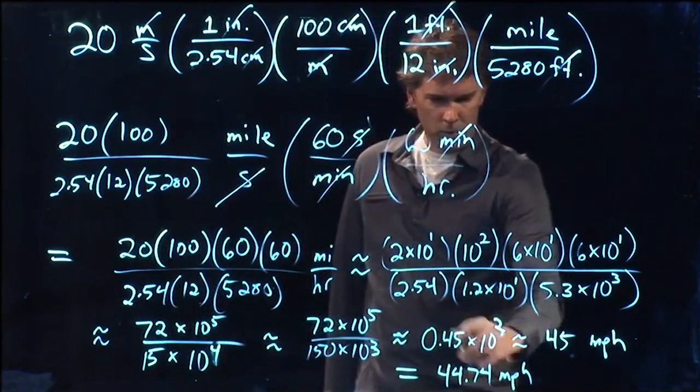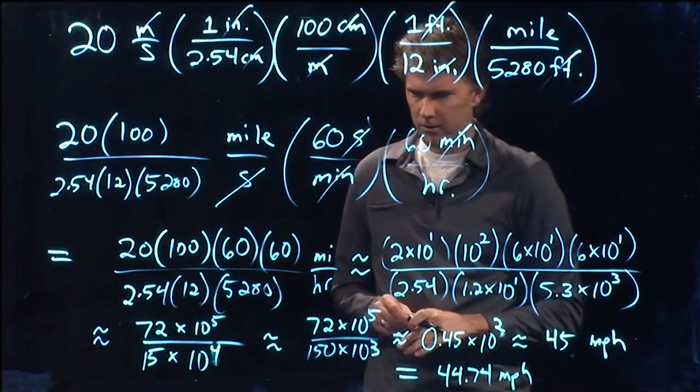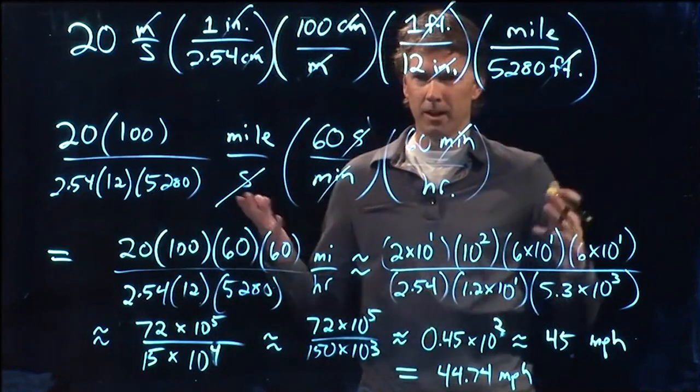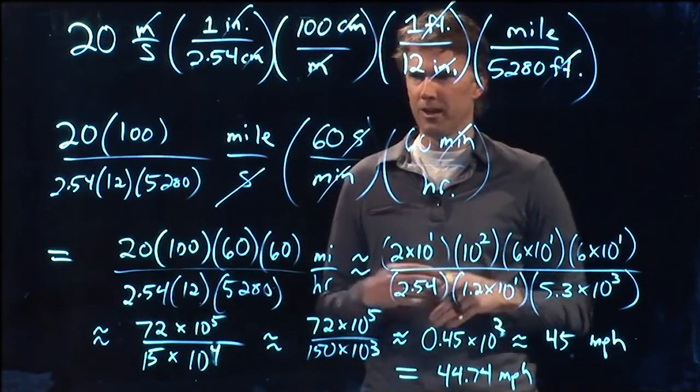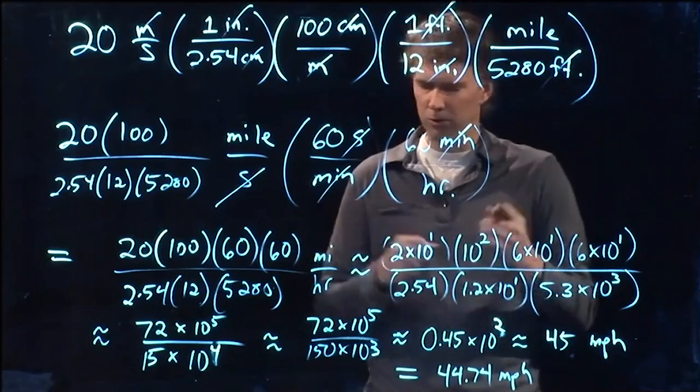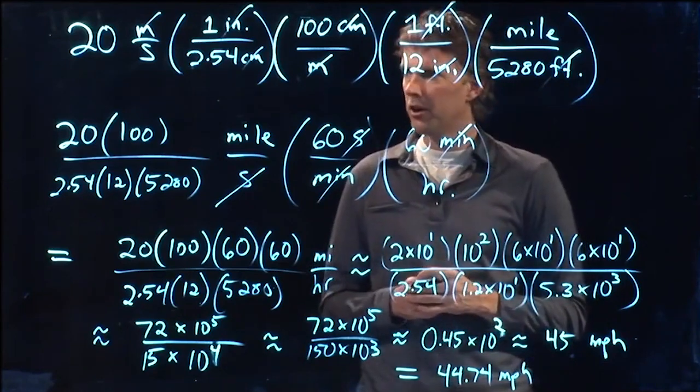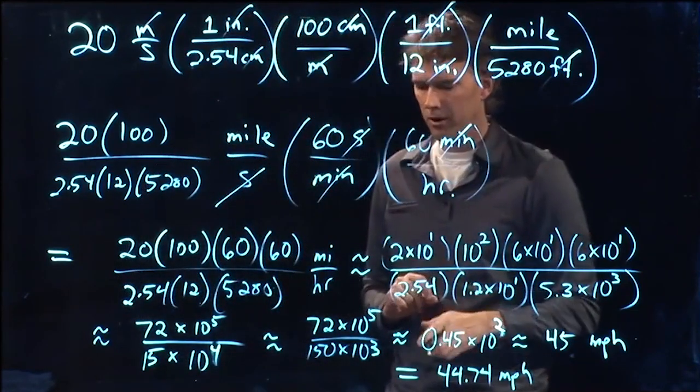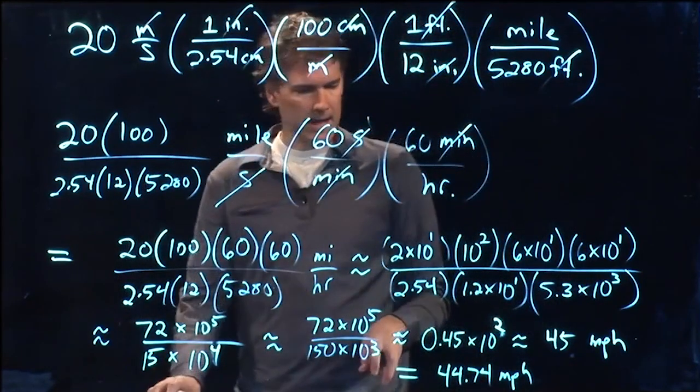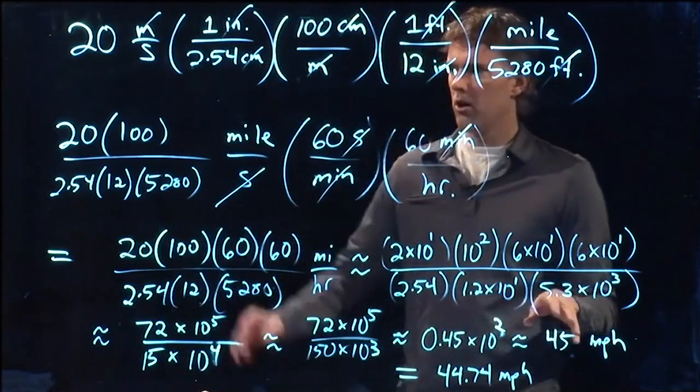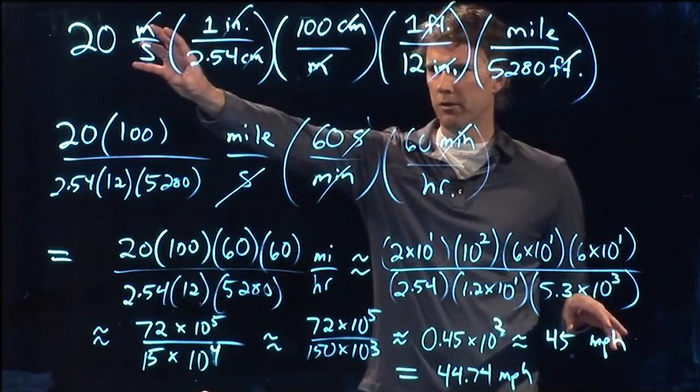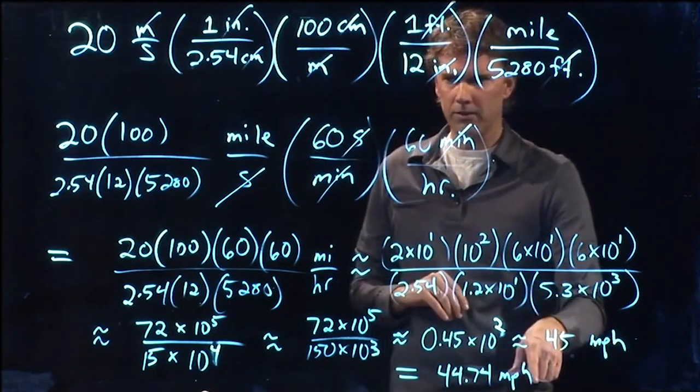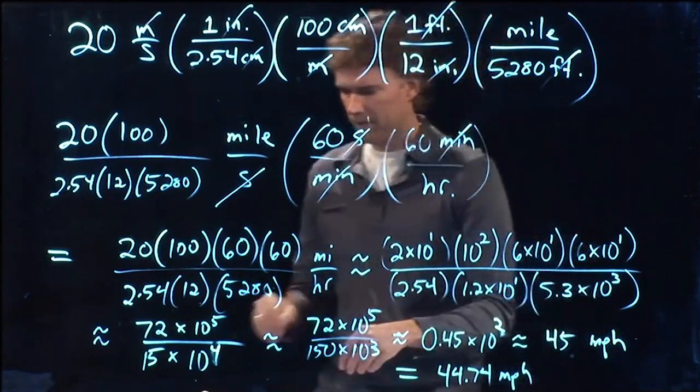So 44 miles per hour. Can you run at 44 miles per hour? No, I mean, that would be like running down the road next to the cars and just cruising along. That's way too fast. So your intuition was right. 20 meters per second is probably too fast for somebody to run. And the idea is that if you don't know exactly the units you're dealing with, if they make sense or not, those numbers, put them in the units that do make sense to you and see.